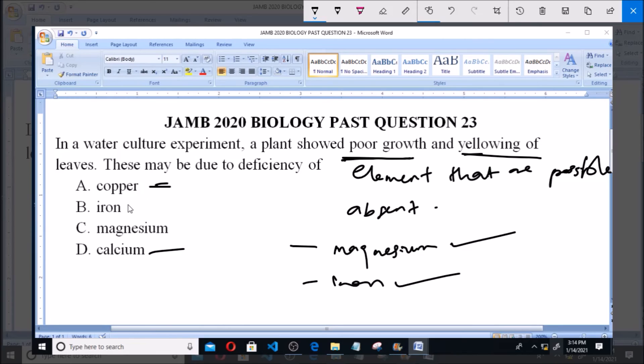When deficiency of iron and magnesium occurs, poor growth is seen and yellowing of leaves is seen. So therefore these two answers are actually correct: option B and option C. They're actually the two correct answers. Thank you, and ensure